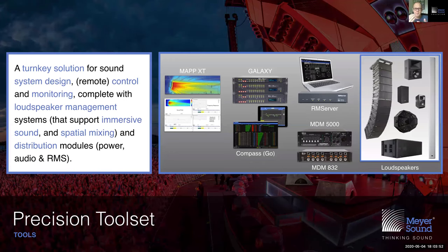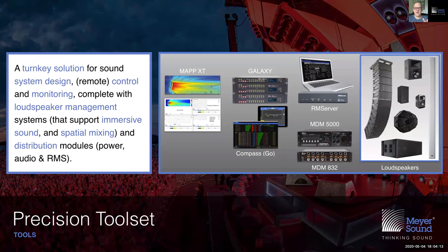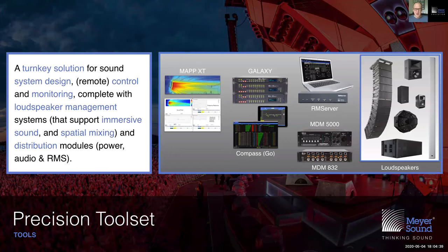We're going to look at one pillar of the precision toolset, which is our turnkey solution for designing systems all the way to deploying systems. CAL is unique in that regard, because with exception of the design part — with exception of MapXT — CAL is literally everything you see in front of you. It is an entire PA system built into a single column: power supplies, signal processing, signal distribution, and a built-in RM server module. It's everything in one package — an entire precision toolset within a single loudspeaker enclosure.